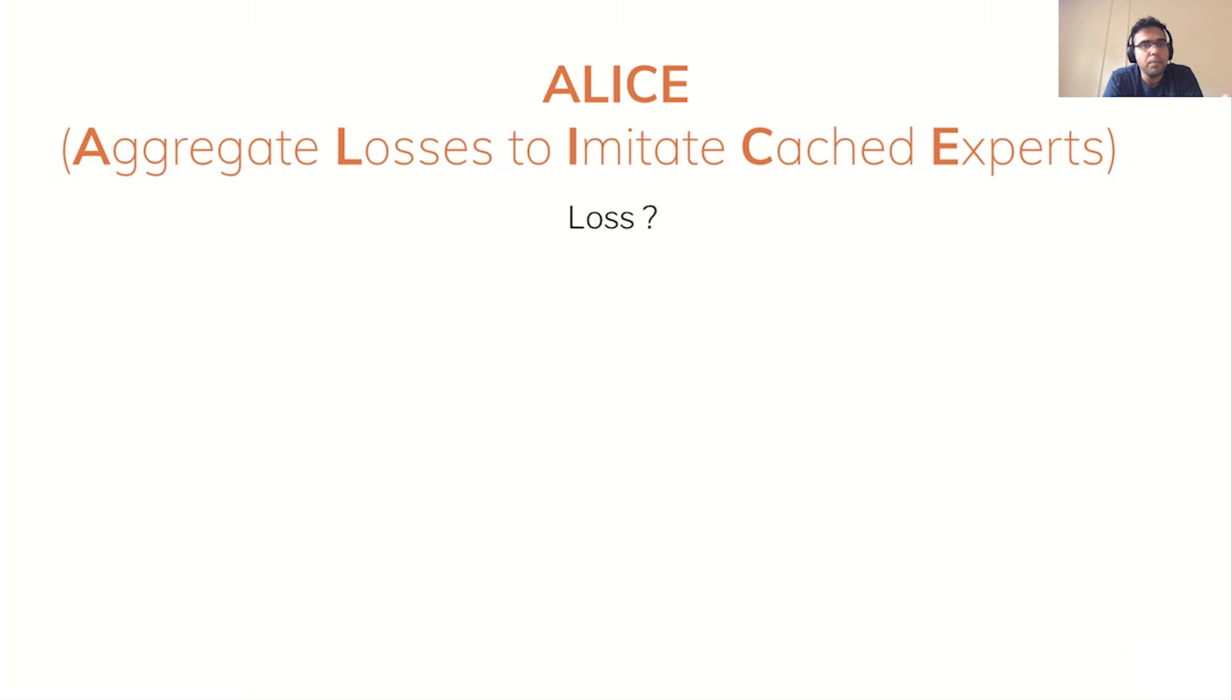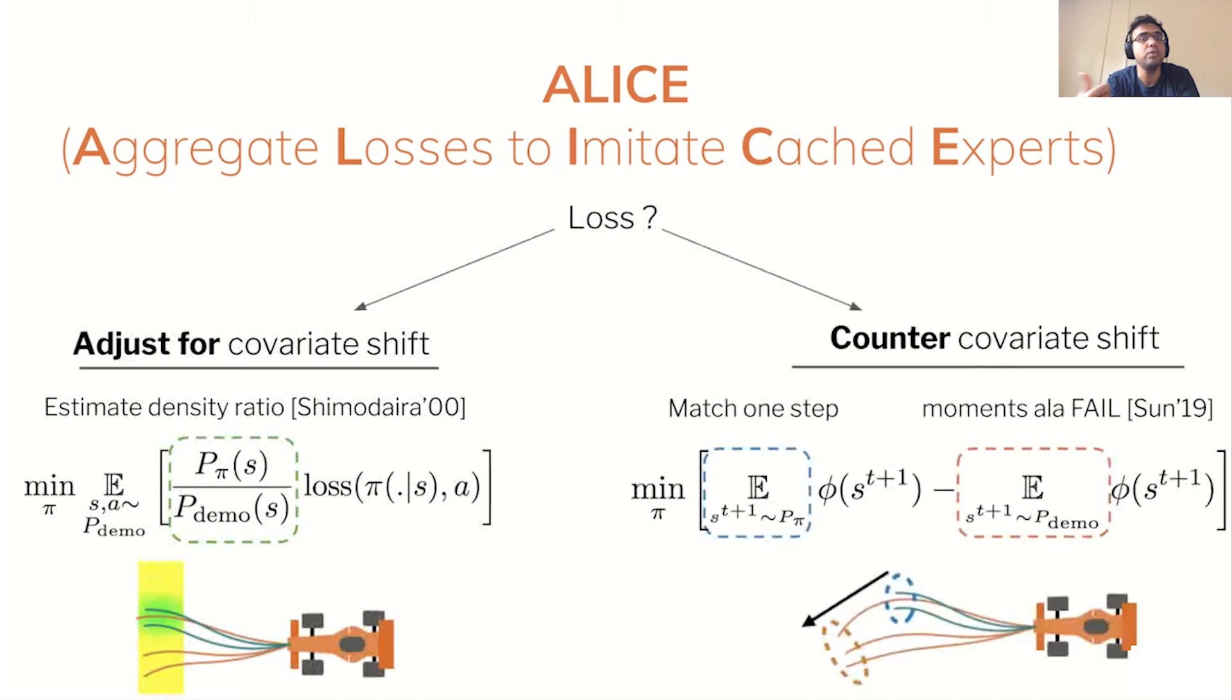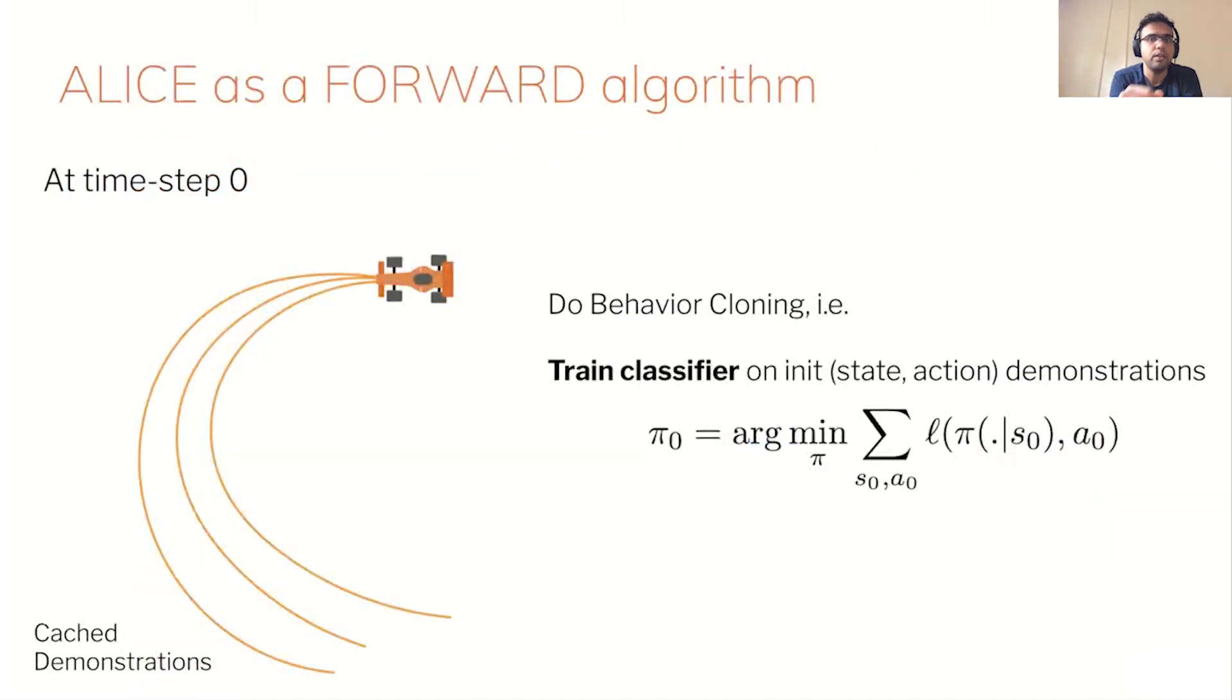So how do we compute this loss? There's several options. We'll talk about two. One loss is to still do classification but adjust for covariate shift by computing the density ratio between the test and train distribution. So we take samples from the simulator and the demonstration, use our favorite density ratio estimator, reweight the data, and then solve the classification problem. Another loss is to instead counter the covariate shift by trying to match moments of the next state. So we can simulate different actions, get next state samples, take corresponding demonstration samples, compute our favorite moments, and try to match them. So we have this very familiar circular problem - the loss depends on the policy, which in turn depends on the loss. Fortunately, we can solve this problem exactly if we unroll ALICE forward through time.